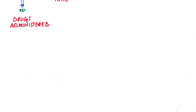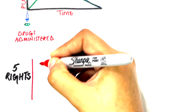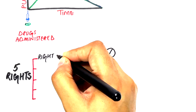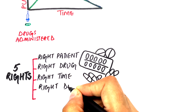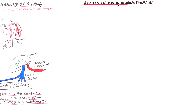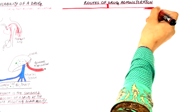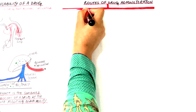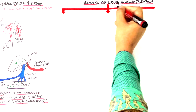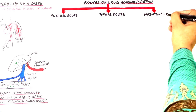It's really important to keep those five rights of drug administration in mind before prescribing any drug. These five rights are the right patient, the right drug, the right time, the right dose, and finally the right route. A route of drug administration in pharmacology simply means the way by which a drug is taken into the body. The route of administration, as well as the formulation — whether it's a tablet, a capsule, or liquid — can highly influence the bioavailability of a drug. The route of drug administration is divided into three main types: enteral, topical, and parenteral routes, each of which has further subcategories.